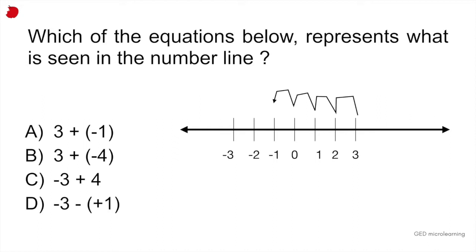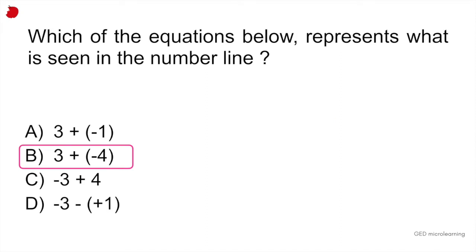If you follow the line from 3 to 2, there's 1, from 2 to 1, that's 2, 1 to 0 is 3, and from 0 to minus 1 is 4. So you're subtracting 4 from 3. The correct equation would be letter B, 3 plus minus 4, or you could also say 3 minus 4.